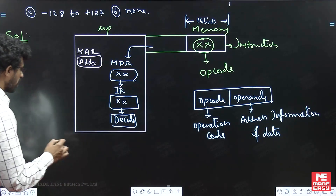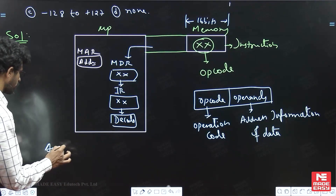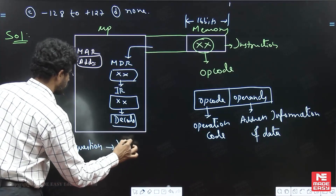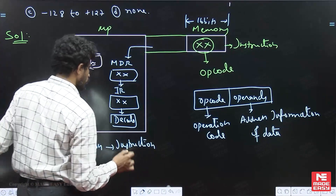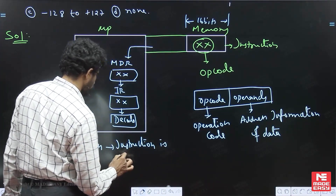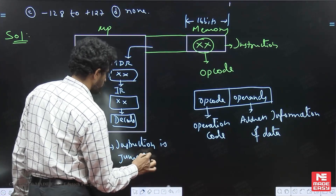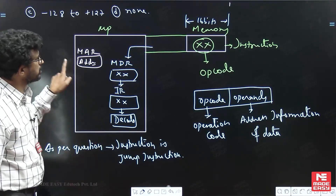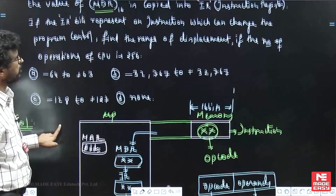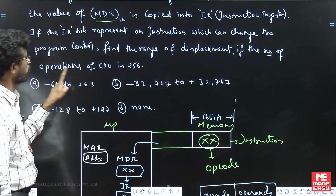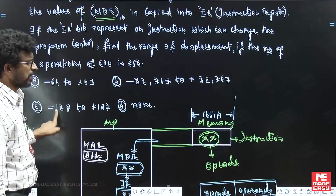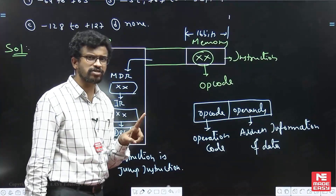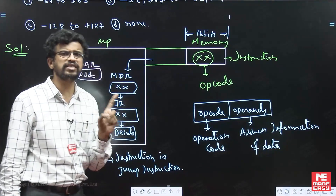If it is changing the program control from one location to another, it is definitely a branch instruction. As per the question, you should understand that the instruction is a jump instruction — specifically an unconditional jump instruction. Now, the question asks: find the range of displacement if the number of operations of CPU is 256. This instruction has opcode and operands, and branch instructions follow PC relative addressing mode.